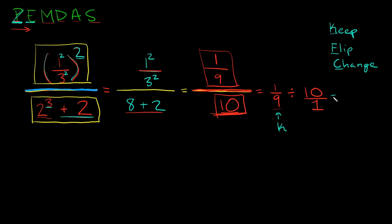And then after that we're going to flip this second fraction. So ten over one is going to turn into one over ten. And then lastly C stands for change your sign. So instead of dividing here we're going to multiply.